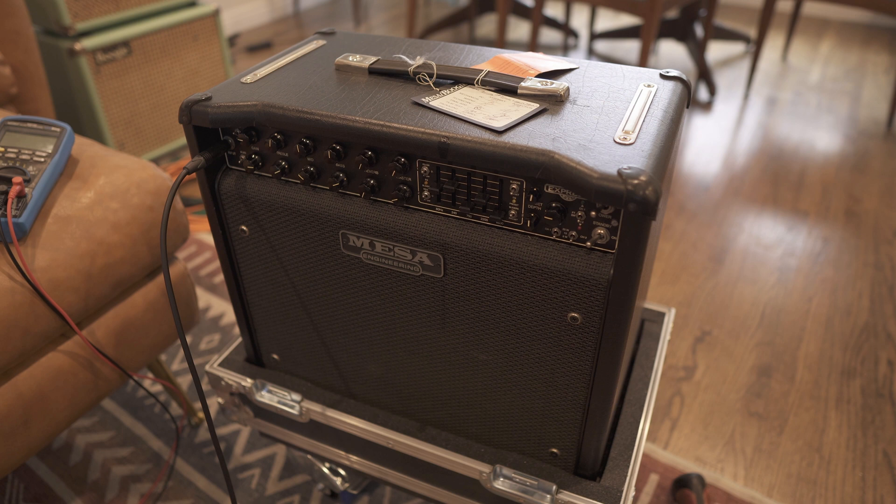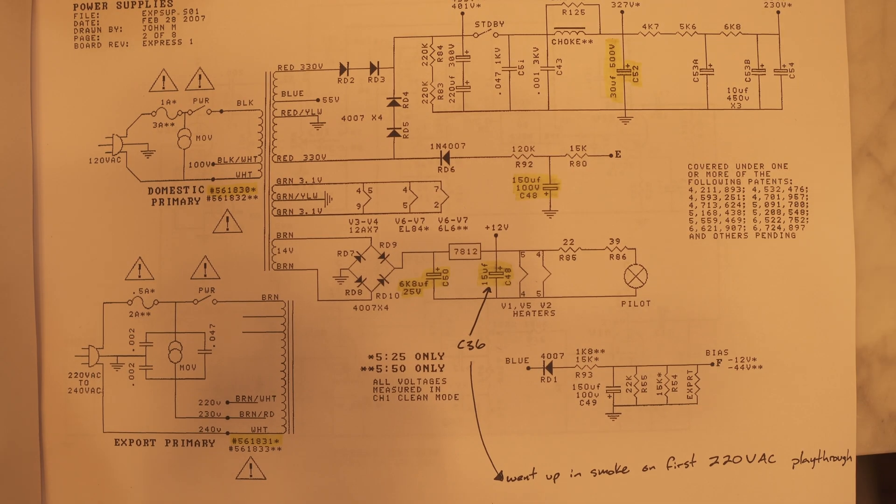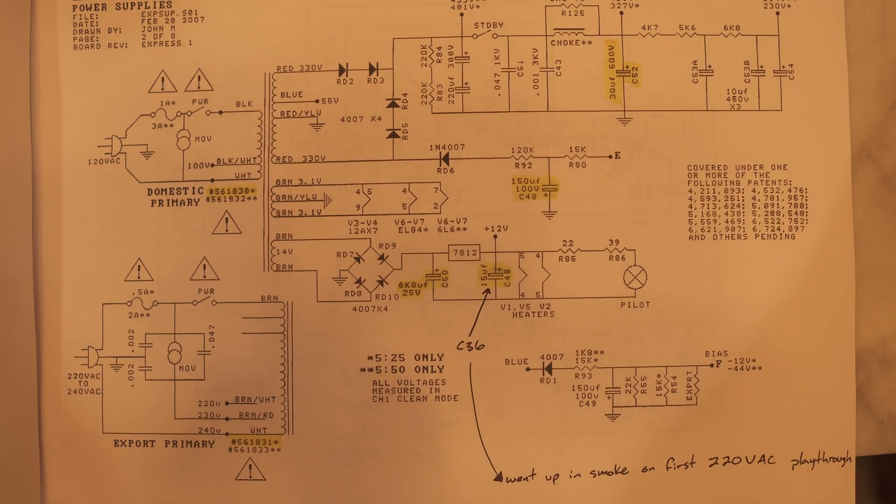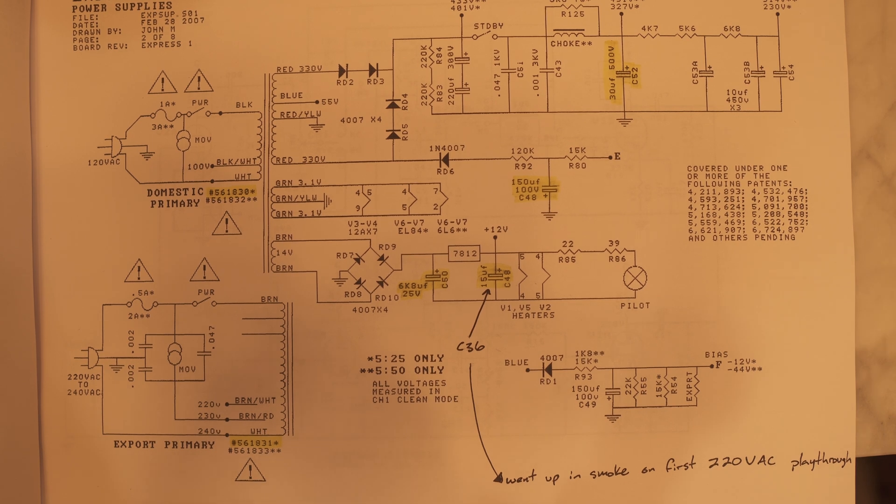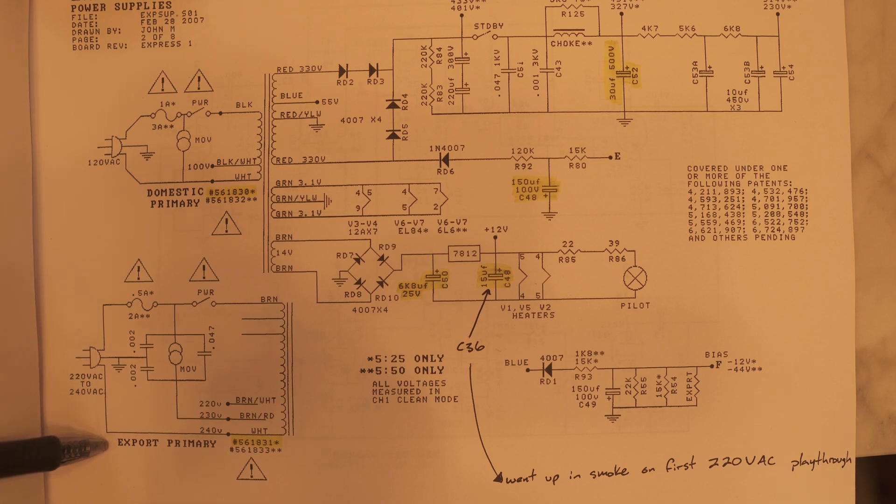Most amps will actually give you the taps you need on the primary side to wire it for whatever country you're in. In this case, Mesa has dedicated transformers, one for domestic and one for export. So to give you a better idea of what we're looking at, we can switch over to the schematic here. On the top you can see the 120 VAC domestic primary, and that's part number 561 830. And then what we have in this amp right now is 561 831, the export primary.